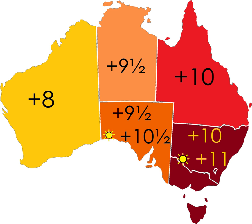Western Standard Time UTC+8: Western Australia – Standard Time Act 2005. Central Standard Time UTC+9:30: South Australia – Standard Time Act 2009 and the Daylight Saving Act 1971; Northern Territory – Standard Time Act 2005. Eastern Standard Time UTC+10: Queensland – Standard Time Act 1894; New South Wales – Standard Time Act 1987 No. 149; Australian Capital Territory – Standard Time and Summer Time Act 1972; Victoria – Summer Time Act 1972; Tasmania – Standard Time Act 1895 and the Daylight Saving Act 2007.